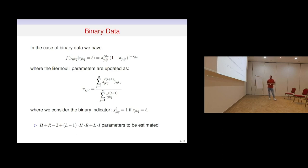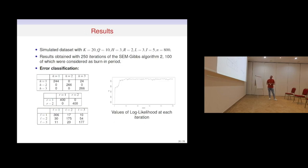The total number of parameters to be estimated is H plus R minus 2 for the mixing proportions for the second levels, L minus 1 times H times R for the mixing proportions for the lower level, and for each binary variable P_I we have L minus 1 parameters. I now show some results obtained by simulating data with 300 units, considering 20 and 10 groups, 3 and 2 latent classes for the second levels, and 3 latent classes for the first level. Results are obtained with 250 iterations using version 2 of the algorithm.